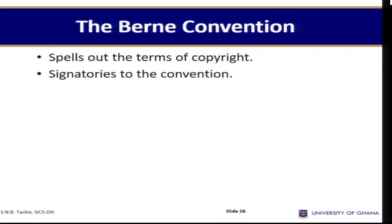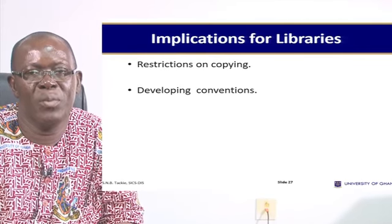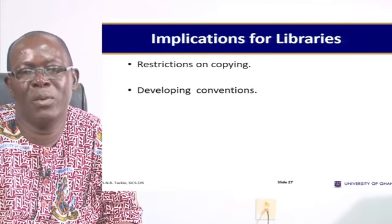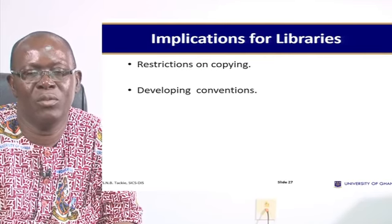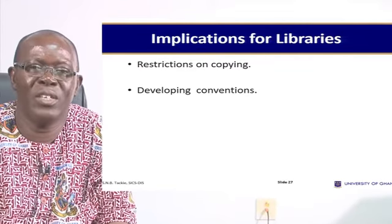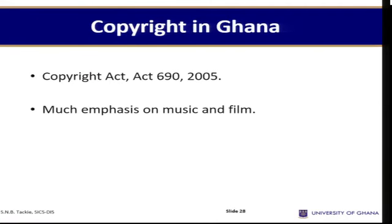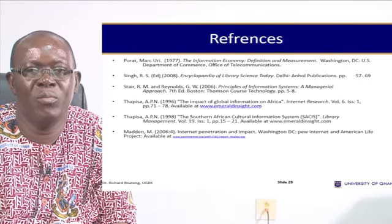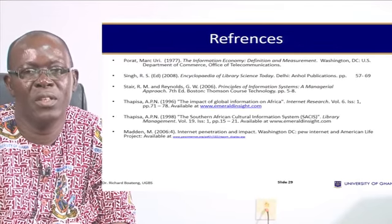The Berne Convention spells out the terms of copyright, and the laws of countries including Ghana are signatories to it. Ghana also has its own copyright law. There are implications of copyright for libraries — there are restrictions on copying, so in a library you will not be allowed to copy a whole book; only about a tenth of the book may be copied. Commercial photocopiers outside that copy everything are acting wrongly and criminally. Ghana's Copyright Act 690 of 2005 protects the properties of people who create music, write books, and produce films.